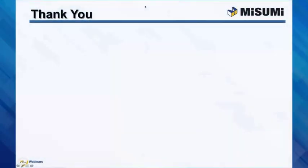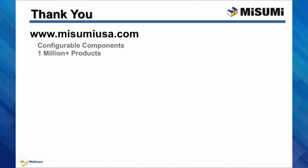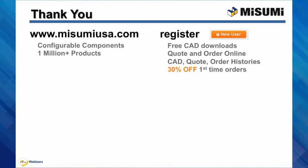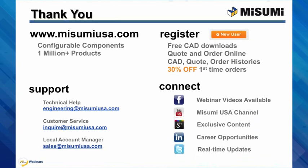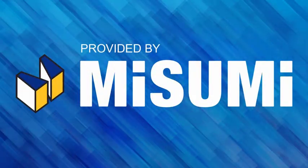This concludes our web presentation. Thank you and we hope you enjoyed today's webinar. All of Misumi's configurable components and 1 million products are available at www.misumiusa.com. If you are new to Misumi, register for access to CAD downloads, online formal quotes and orders, and manage all of your account histories. For first-time companies purchasing, you can receive 30% off. Technical help is available at engineering@misumiusa.com, customer service at Inquire, and your local account manager at Sales. Connect with us on Facebook to join the conversation and see exclusive content.